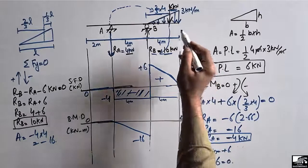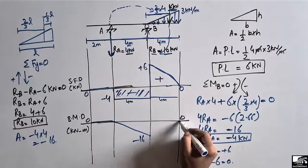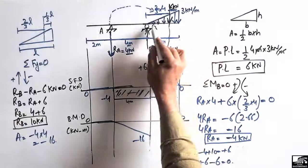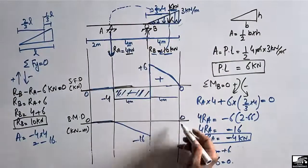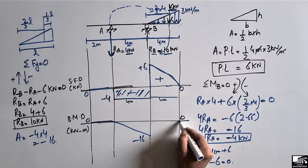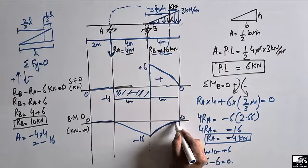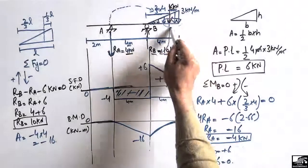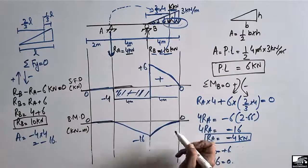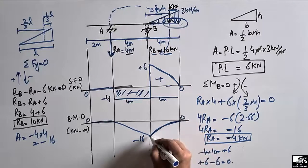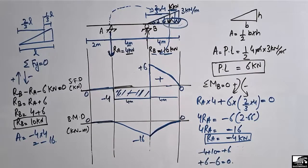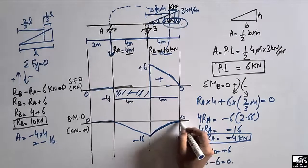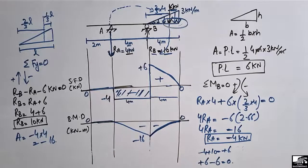There is a shortcut: since there is no fixed support at the free end of the beam, the bending moment must be zero there. Similarly, at the other free end, bending moment is also zero. So we draw a line from minus 16 kilo Newton meter at B, bringing it to zero at the free end. The maximum bending moment is minus 16 kilo Newton meter, which is negative (hogging).